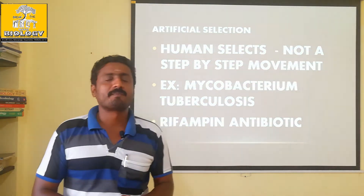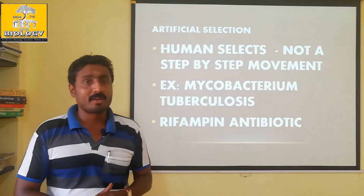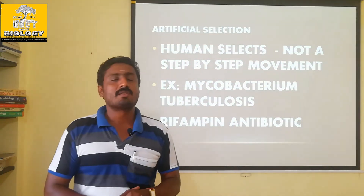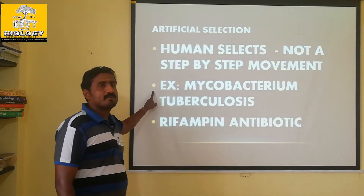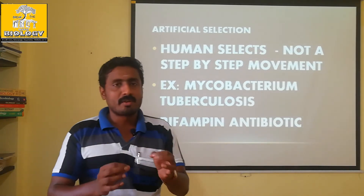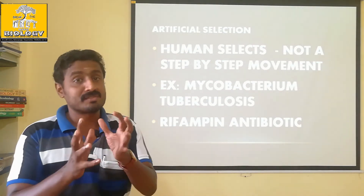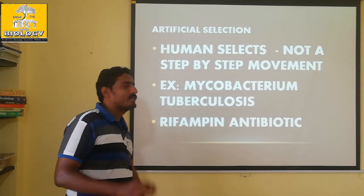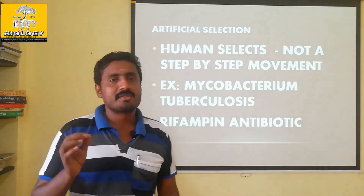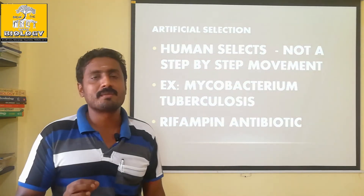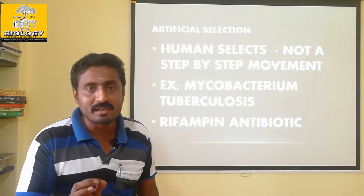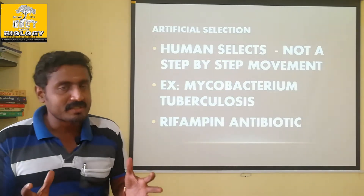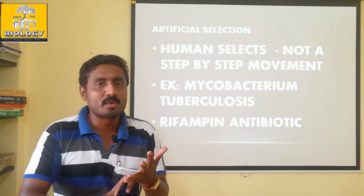For example, let's look at Mycobacterium tuberculosis — TB. If a patient has TB, there is a tumor in the lungs. What does Darwin say? In a population of the same species, there is variation in survival ability. A population has stronger, moderate, and weaker individuals.